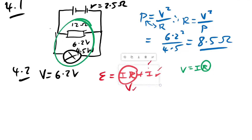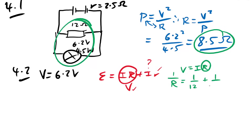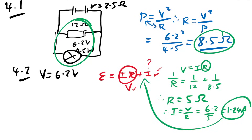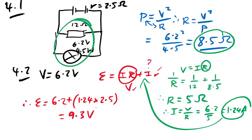Question 4.2: the terminal PD is 6.2 V. The resistors (12 Ω and 8.5 Ω) are in parallel: 1/R_total = 1/12 + 1/8.5, giving R_total ≈ 5 Ω. Current = V/R = 6.2/5 = 1.24 A. Then EMF = terminal PD + I×r = 6.2 + 1.24×2.5 ≈ 9.3 V.